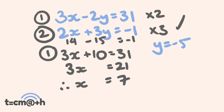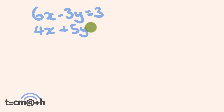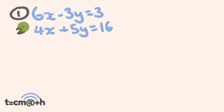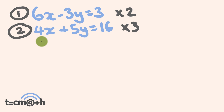Okay, what about one last one? This is going to be 6x minus 3y and that is going to equal 3. And we're going to have 4x plus 5y and that is going to equal 16. Let's go through and solve it. The very first thing we do is give each one a label — equation 1 and equation 2. You're going to see that we don't have anything that lines up nicely here. We have 6x and we have 4x, so a number that both of these go into — the simplest one I can think of — is 12.